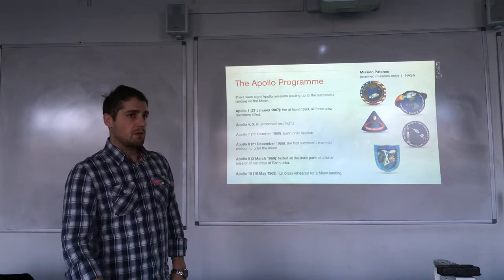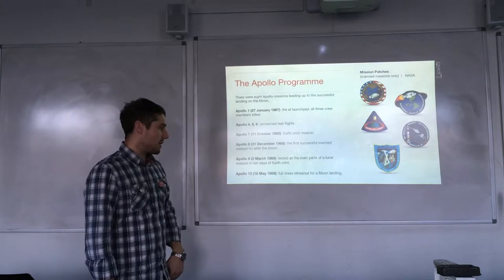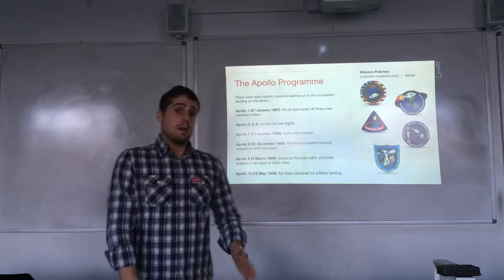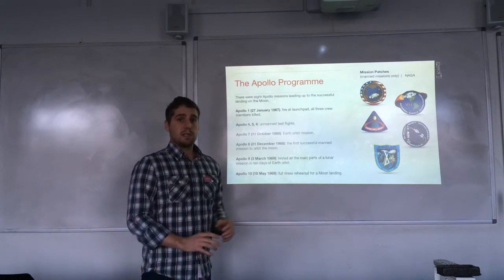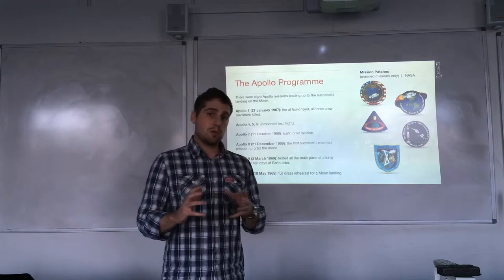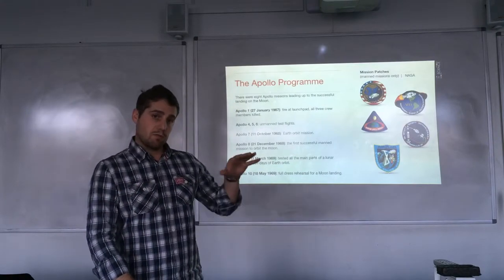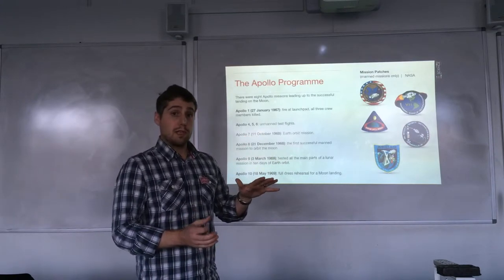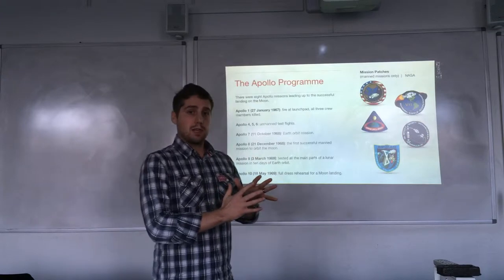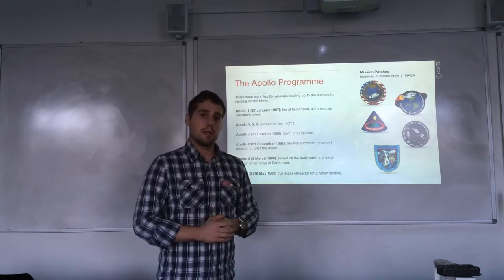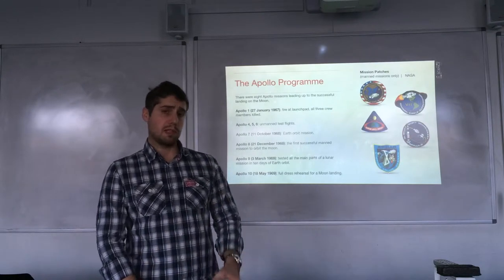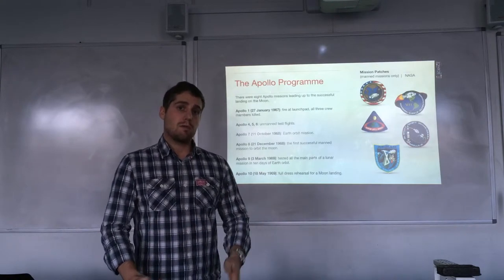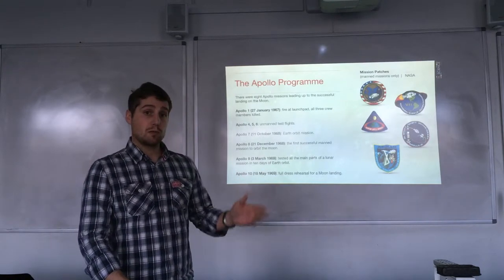Apollo 10, the one just before Apollo 11, was launched in May 1969 and was a full dress rehearsal for the moon landing. The astronauts went to the Moon, orbited, then detached the lunar module from the command and service module and took it down into low lunar orbit close to the Moon's surface. They then jettisoned the landing equipment and went back to re-dock with the command and service module. It wasn't meant to land — it was meant to get really close and test all of the equipment before Apollo 11 would attempt to land.